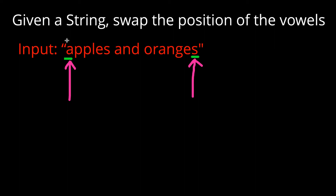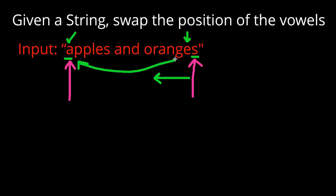In this case A is a vowel and S is not. Once our leftmost pointer finds a vowel, we move the rightmost pointer inwards until it also finds a vowel. As we move it to the next value, we get to E, which is indeed a vowel, and all we have to do from there is swap them. We keep going until each pointer reaches the middle of the string and they're both pointing to the same character, at which point we can stop.